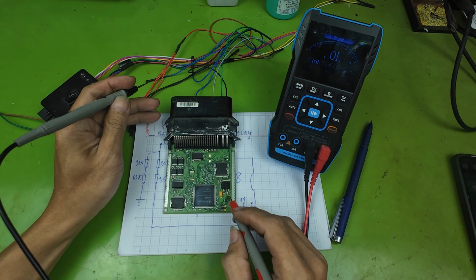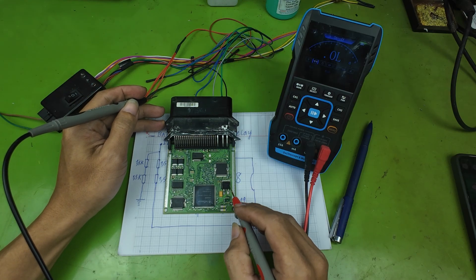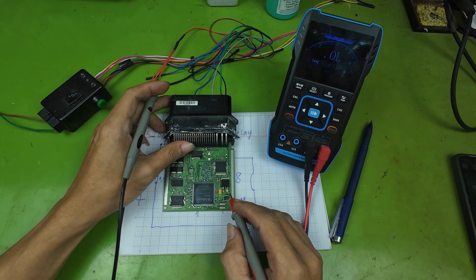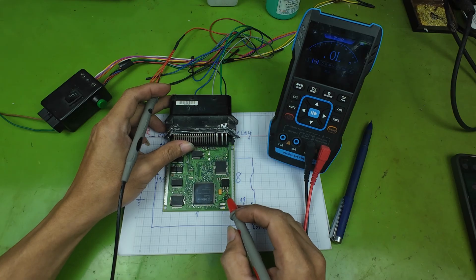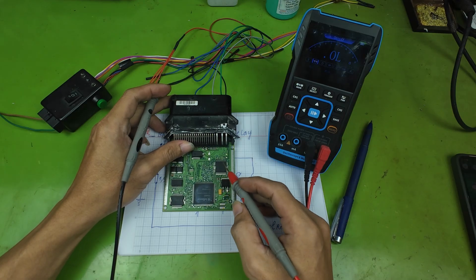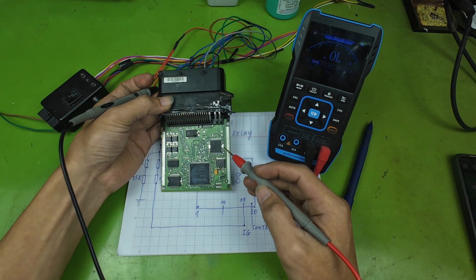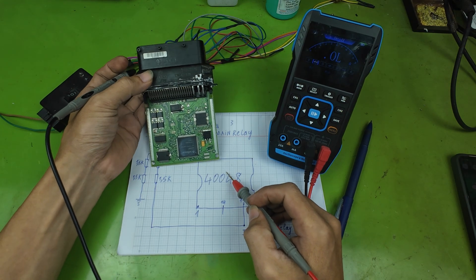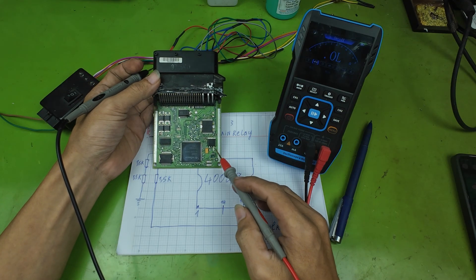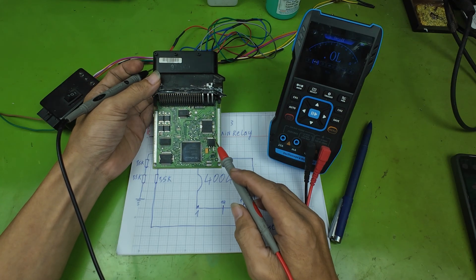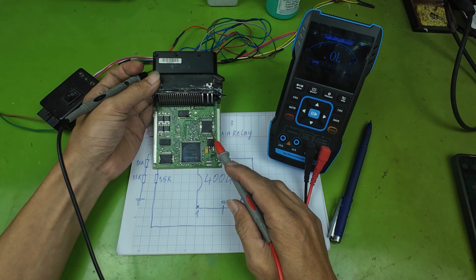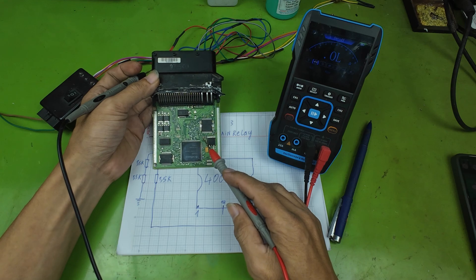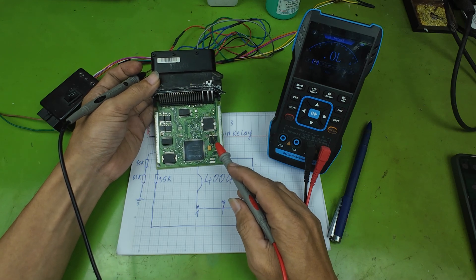The 5-volt line does not go directly to the MCU. It powers the driver ICs, and it also supplies power back to the IC40048. From my analysis, this 5-volt line acts like an enable signal for the IC40048. When this IC is enabled, it will create other power rails for the MCU.